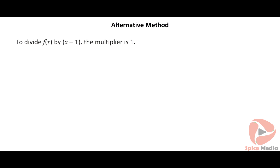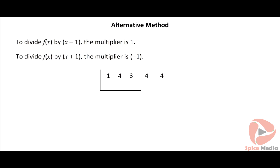To divide f(x) by x − 1, the multiplier is 1. To divide f(x) by x + 1, the multiplier is −1.